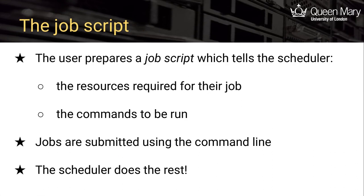To give your job to the job scheduler, you prepare a small file called a job script. It contains the resources required, such as the number of cores, the amount of RAM, and how long it's going to run for — then you add the commands you will run. Submit it with a simple command. You don't need to choose the nodes to run on; the scheduler knows what's being used, what's available, and where's best to run it. There are also utilities to check what other jobs are in the queue and where your job is.